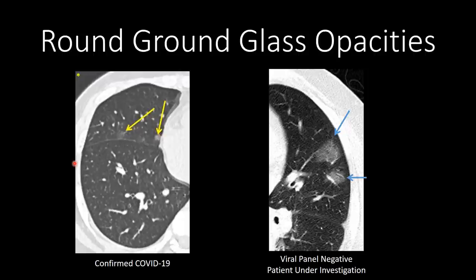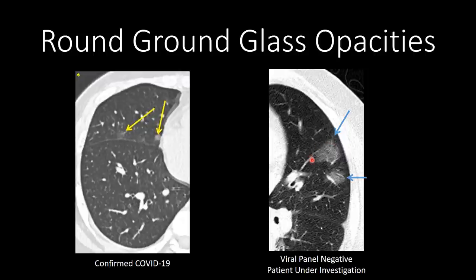Here we have a case from Adam Bernheim at Mount Sinai showing early ground glass opacities — small, ill-defined ground glass opacities with a rounded configuration. This is a patient presenting with fever and respiratory symptoms who had a negative flu and traditional viral panel PCR, and is therefore under investigation for COVID-19 infection. We can see these ill-defined ground glass opacities with a rounded morphology in the periphery of the left upper lobe.